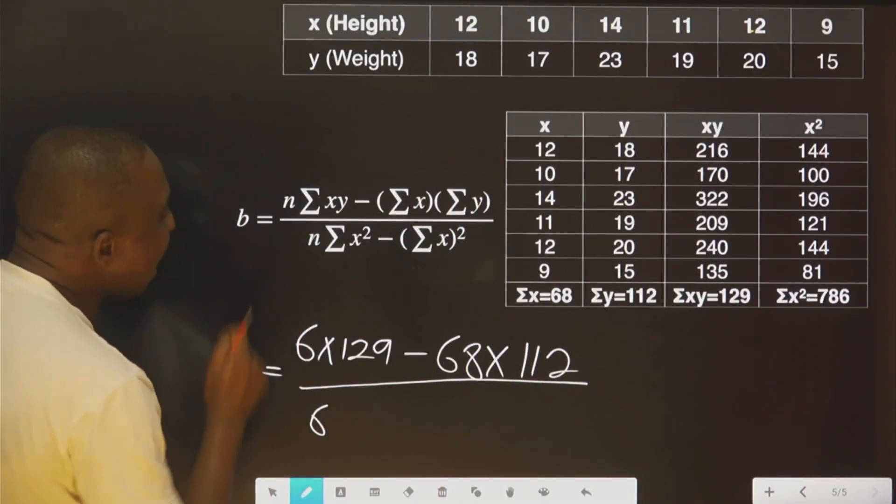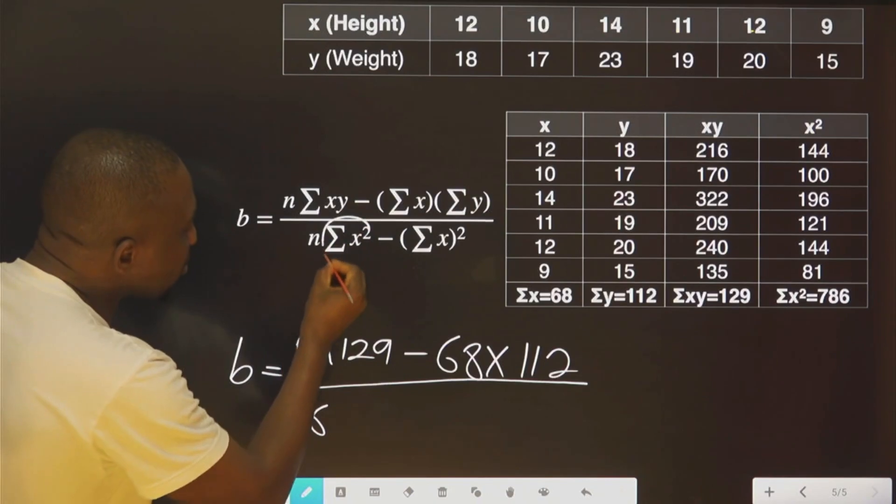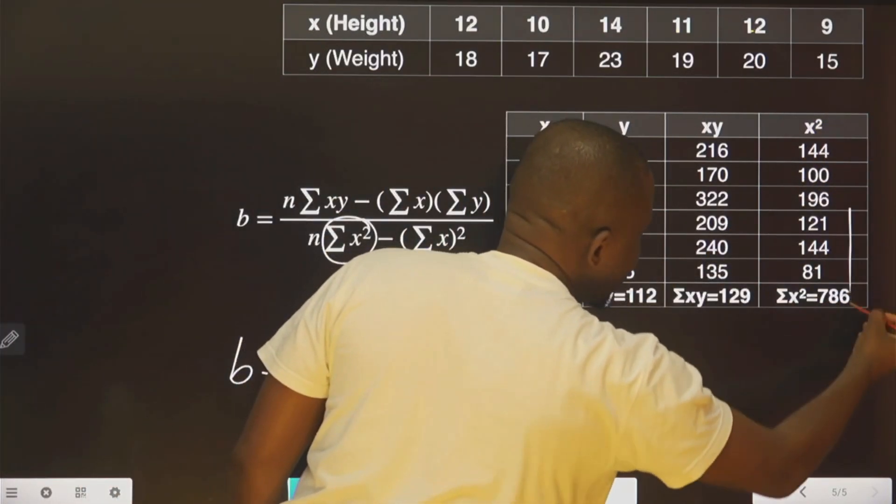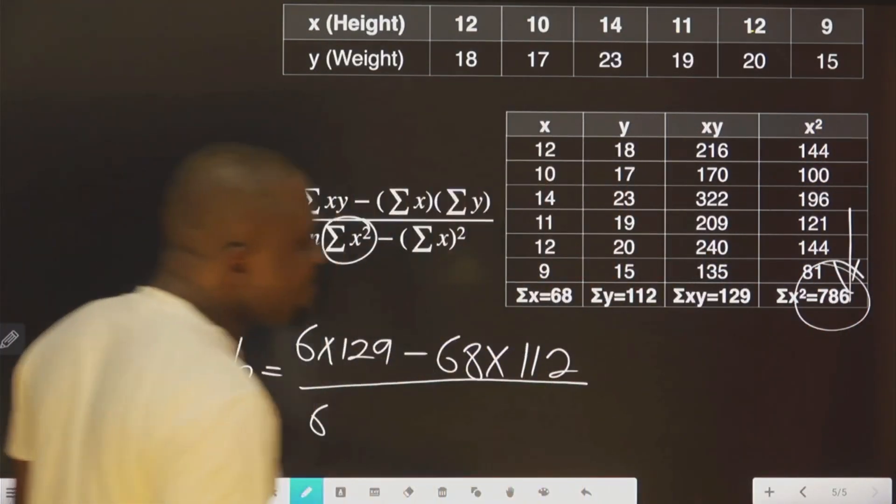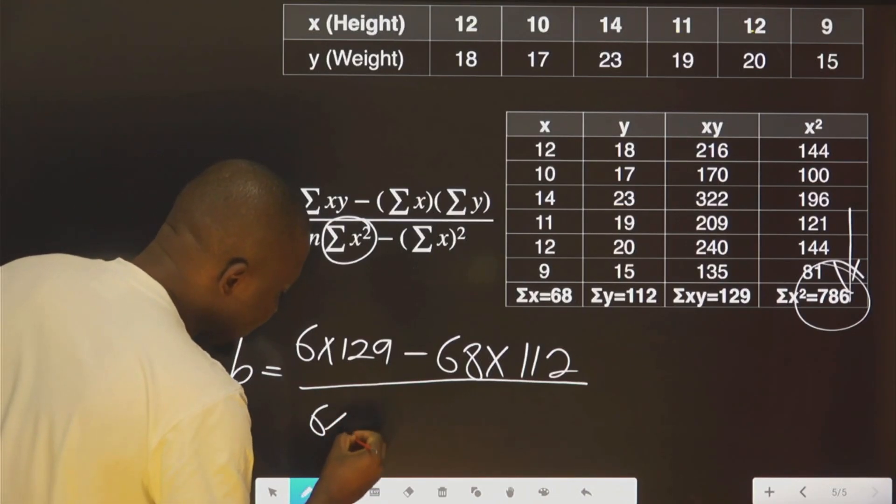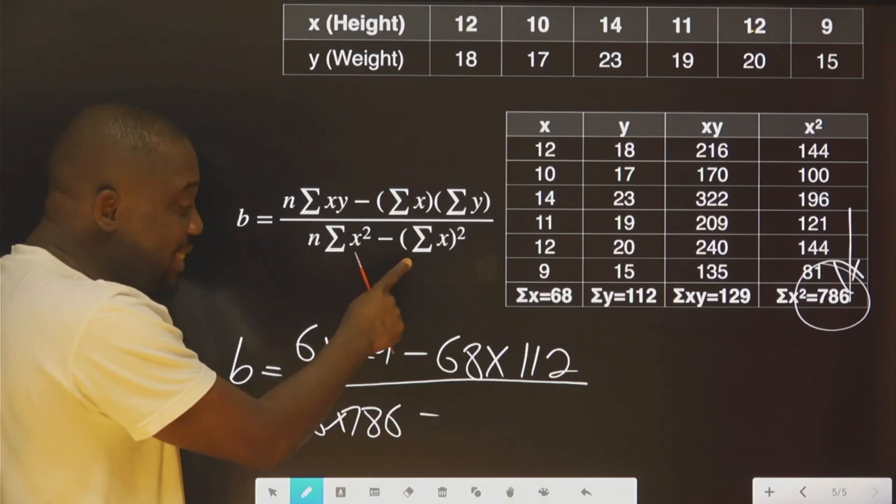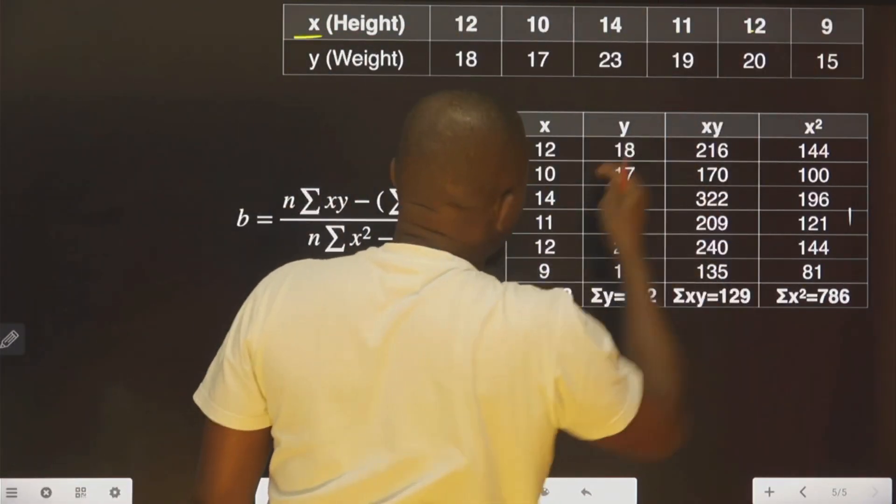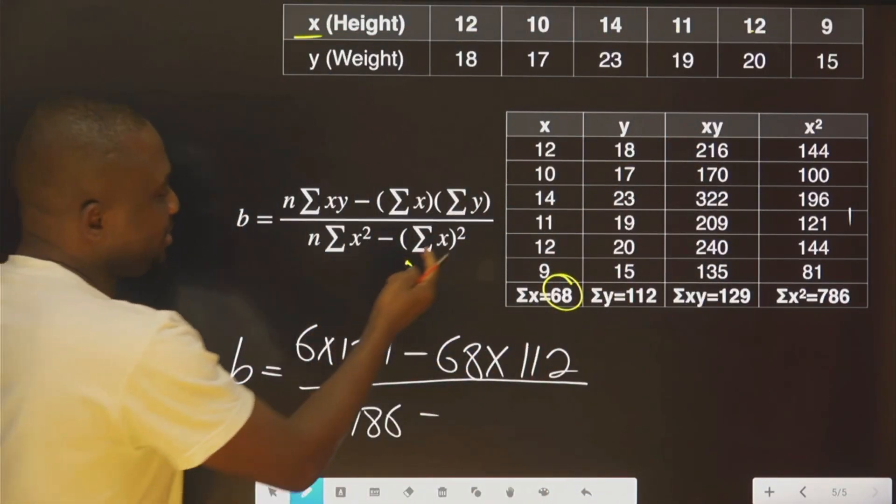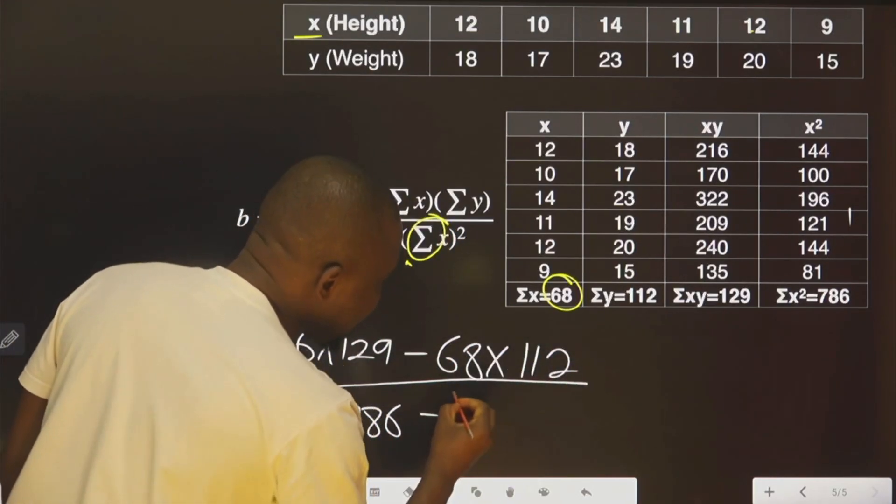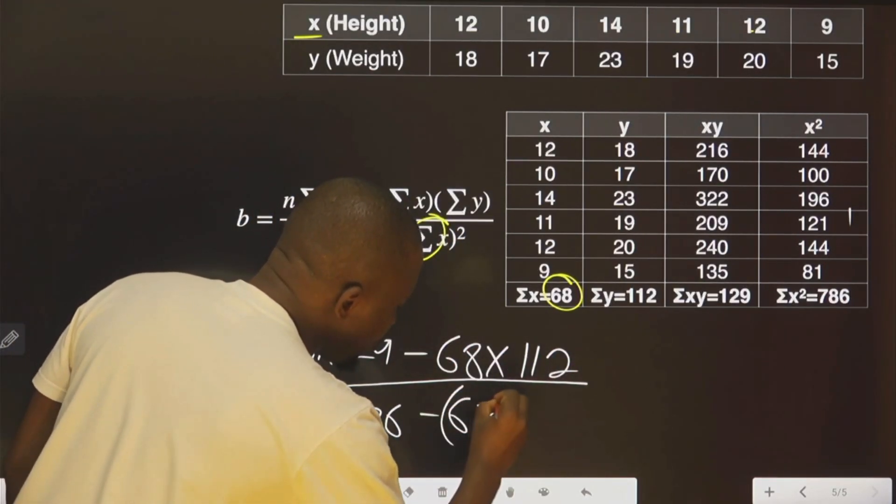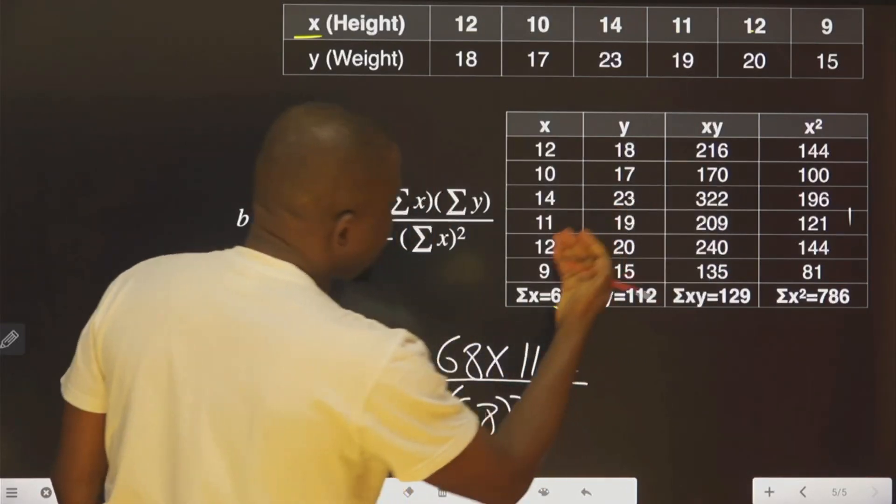6 again for n. Then, this one is this, 786, minus this, is the square of the summation of this, that is this, you will see here. You square it, that is 68 square. That is all.